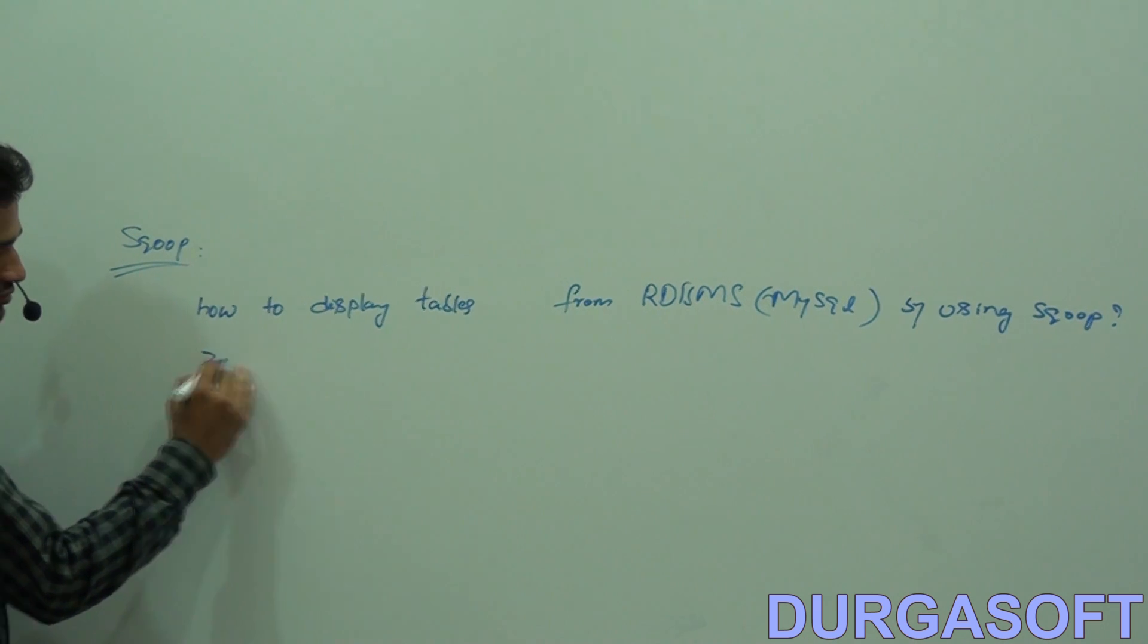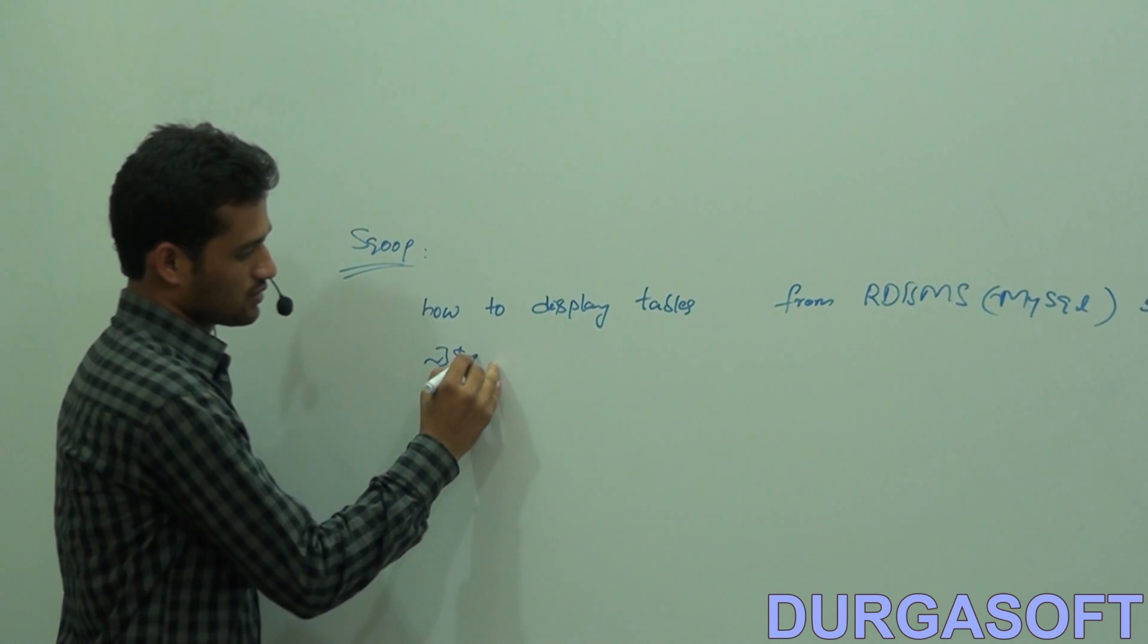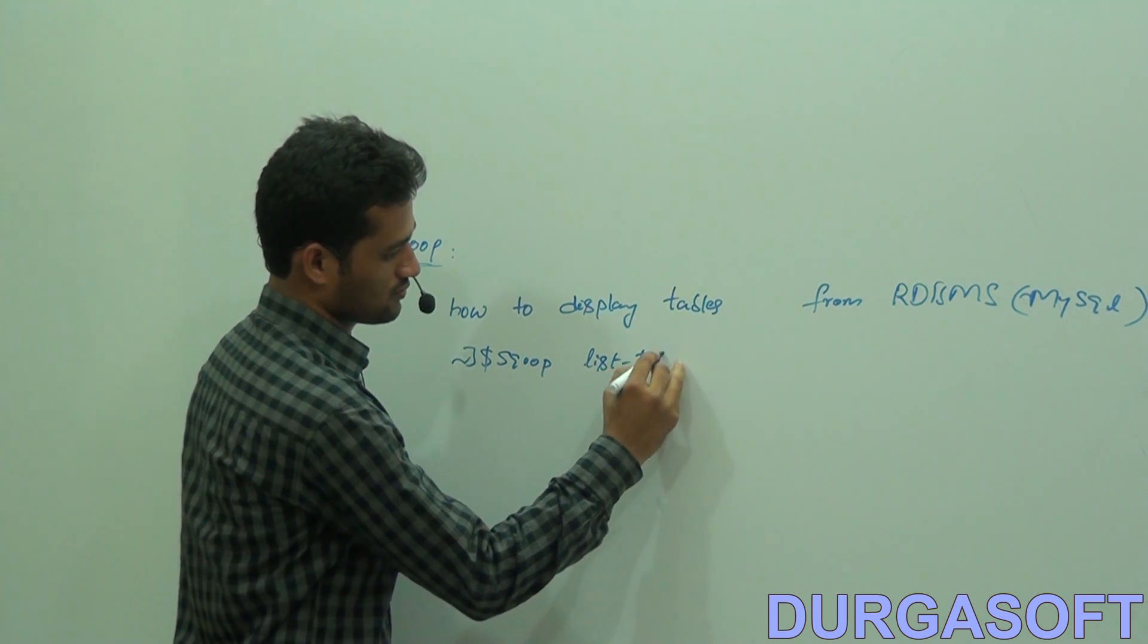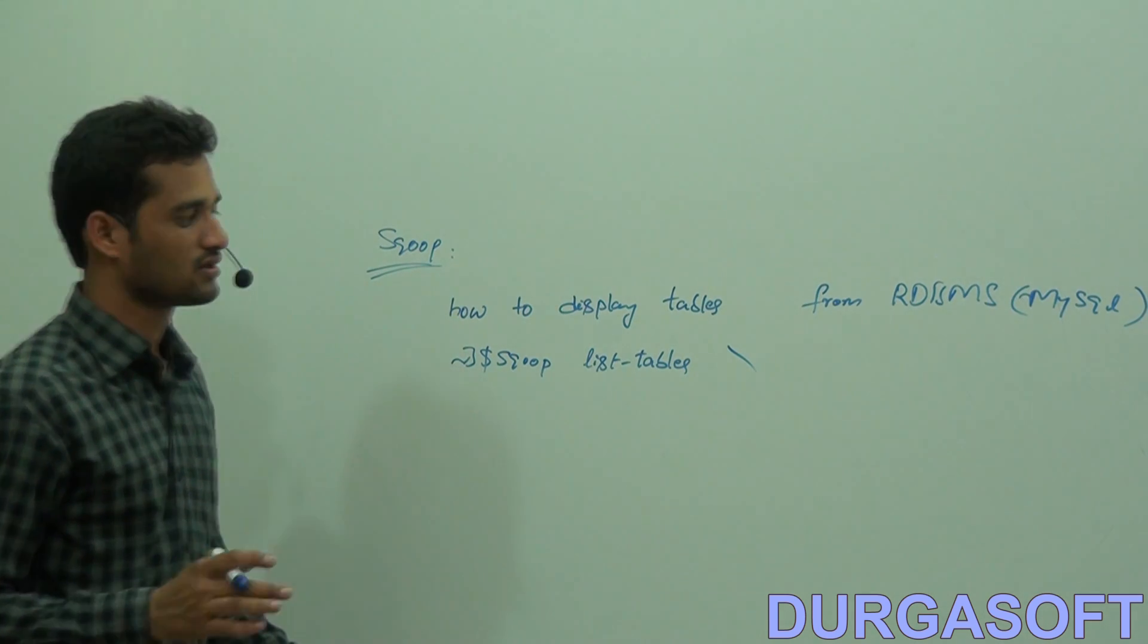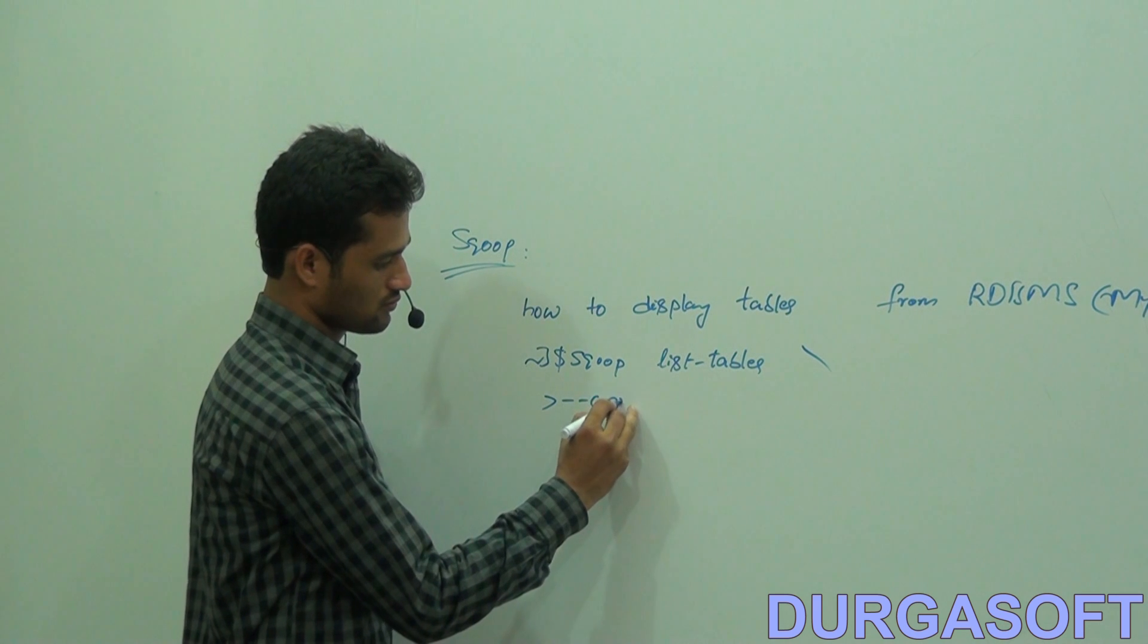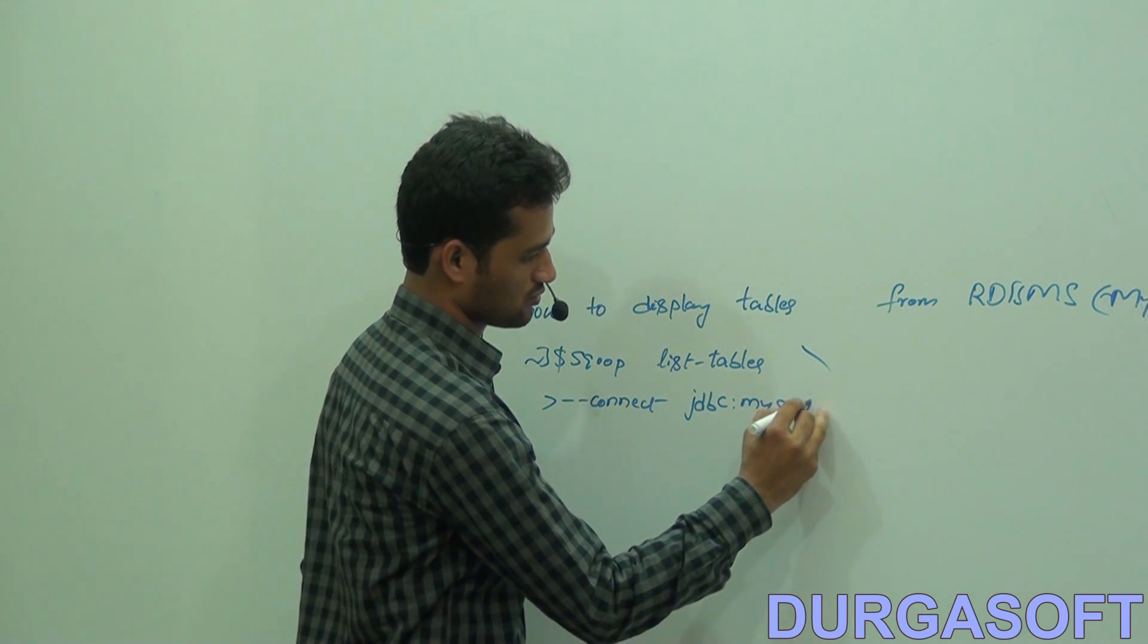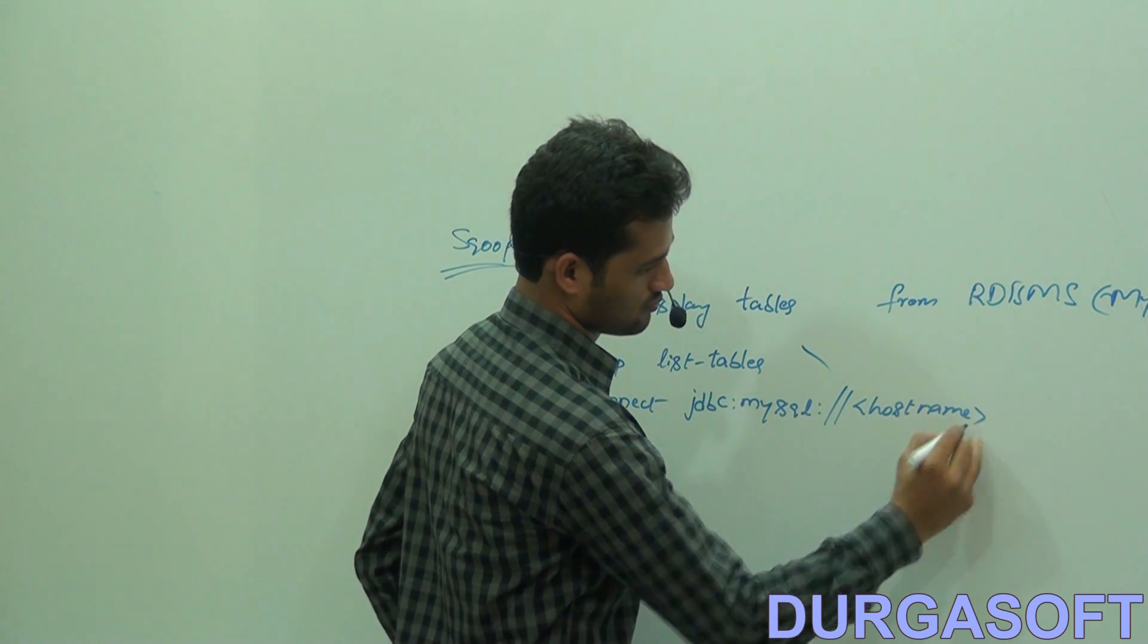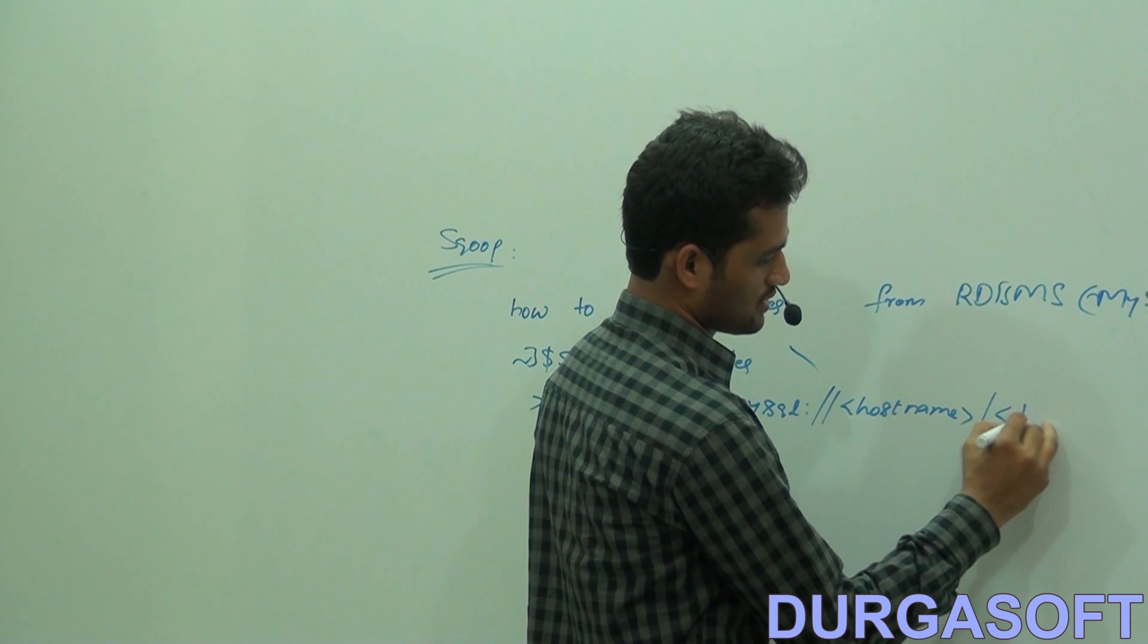This backward slash is for a new line. Hyphen hyphen connect space jdbc colon mysql colon two forward slashes hostname slash database name.